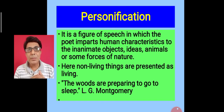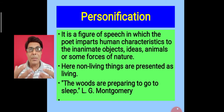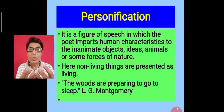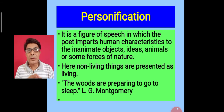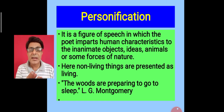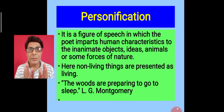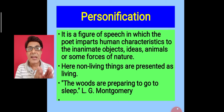Another poetic device is personification, which is widely used by English poets. It is a figure of speech in which the poet gives or imparts some human qualities, some human characteristics to something which is not human, to something which is inanimate. Sometimes these human qualities are given to some ideas, some animals, or sometimes to some forces of nature. In short, in personification, non-living things are presented as living things.